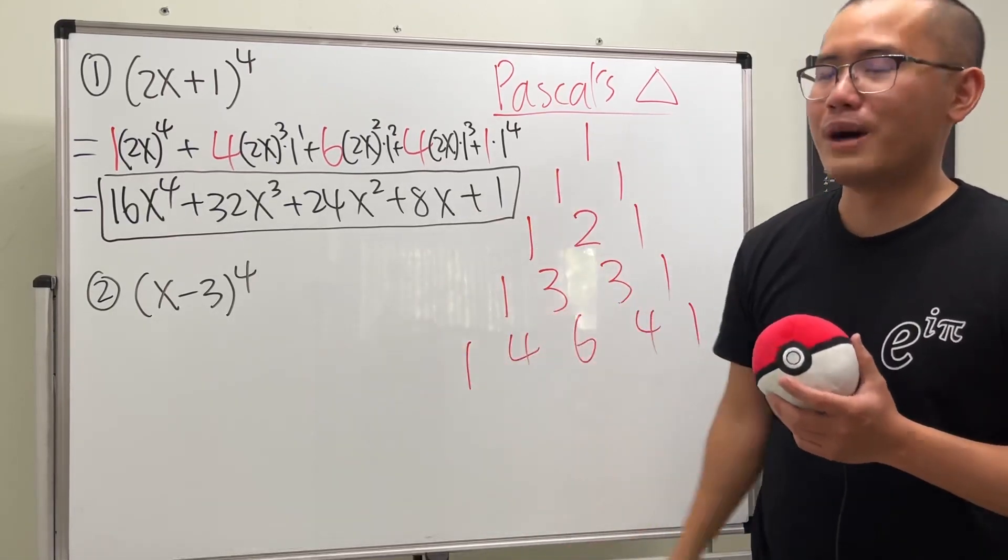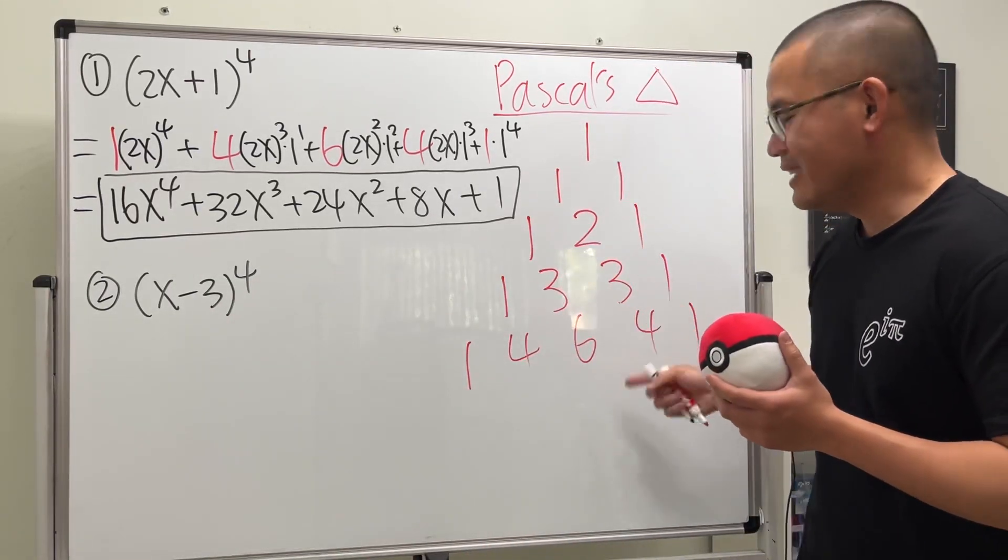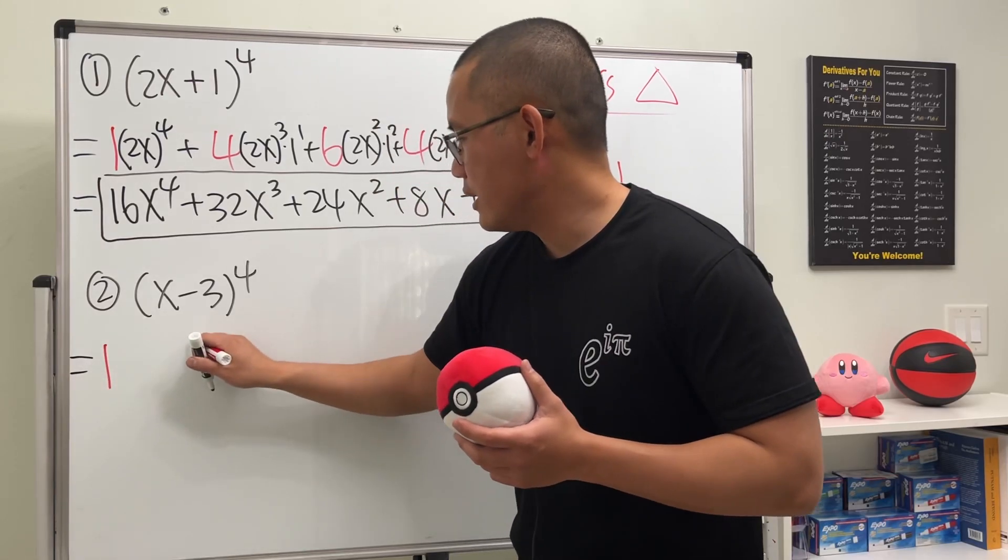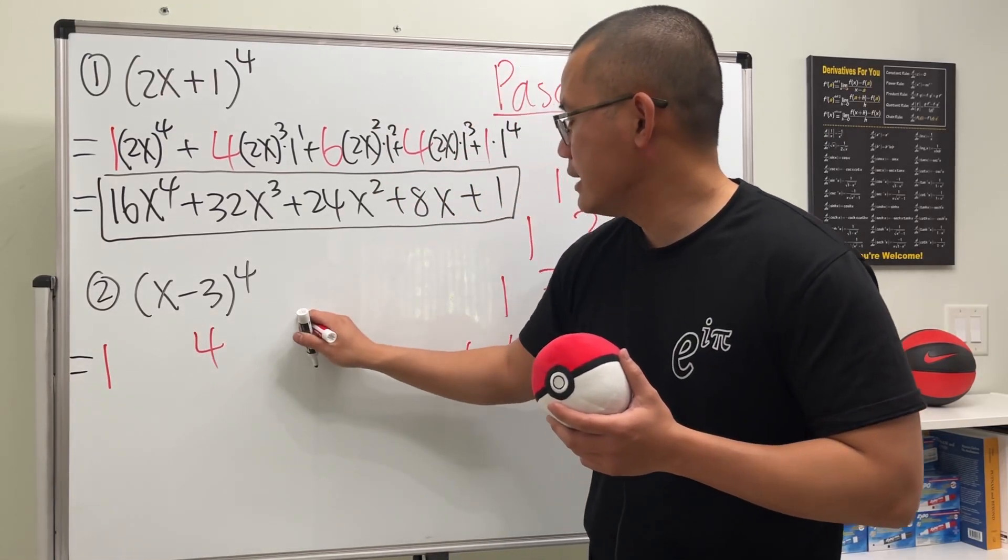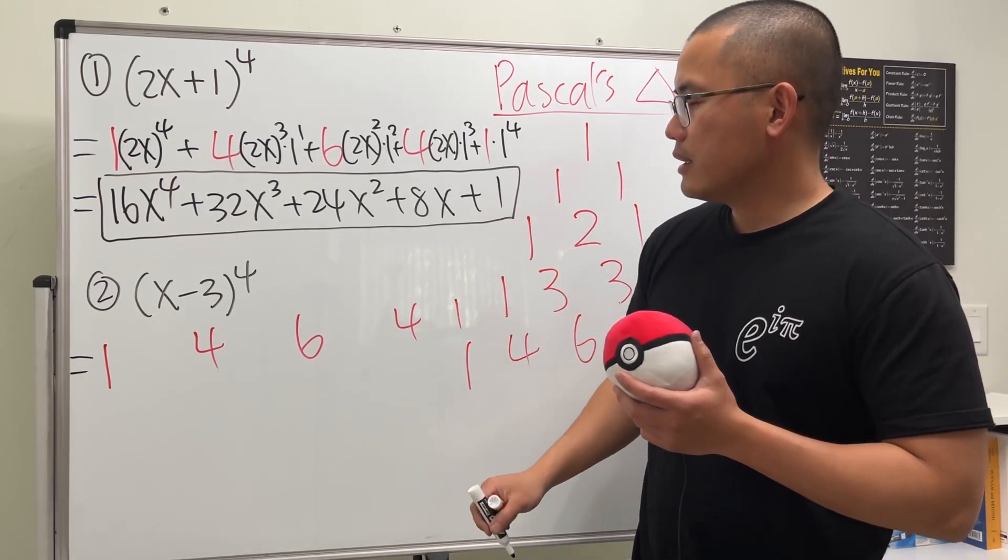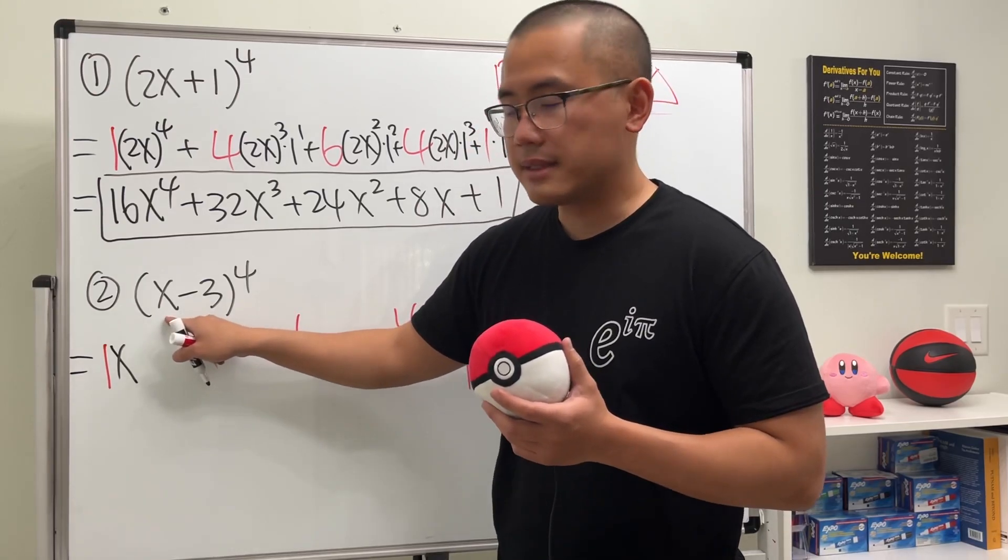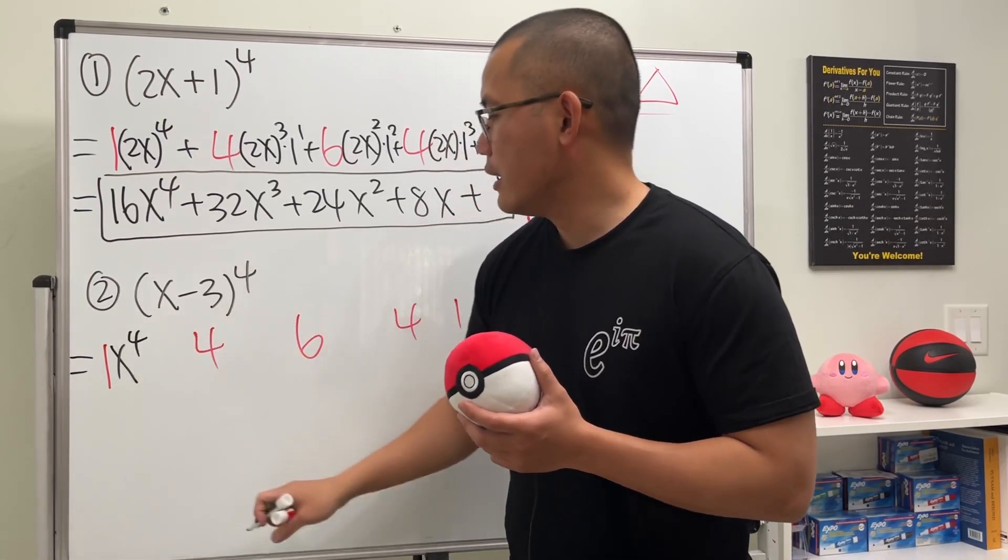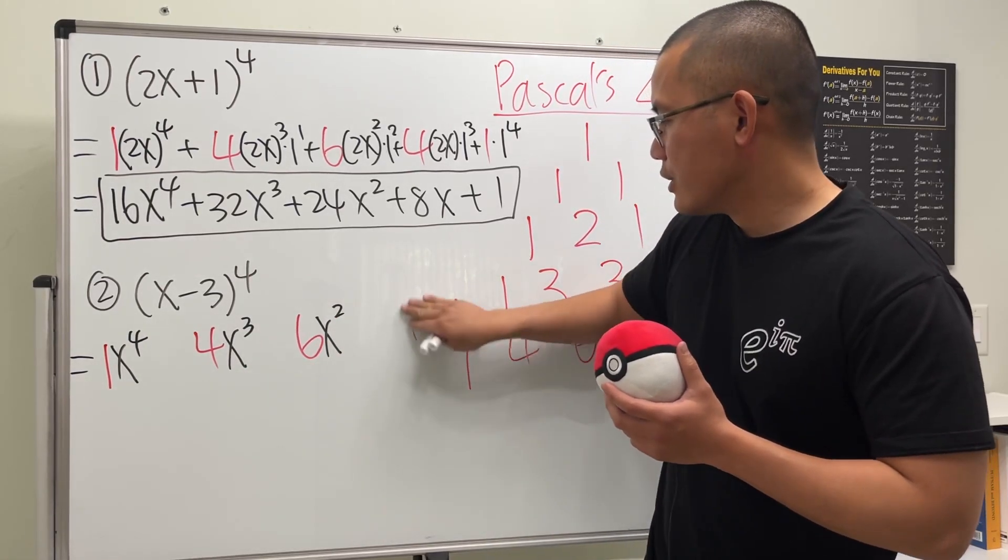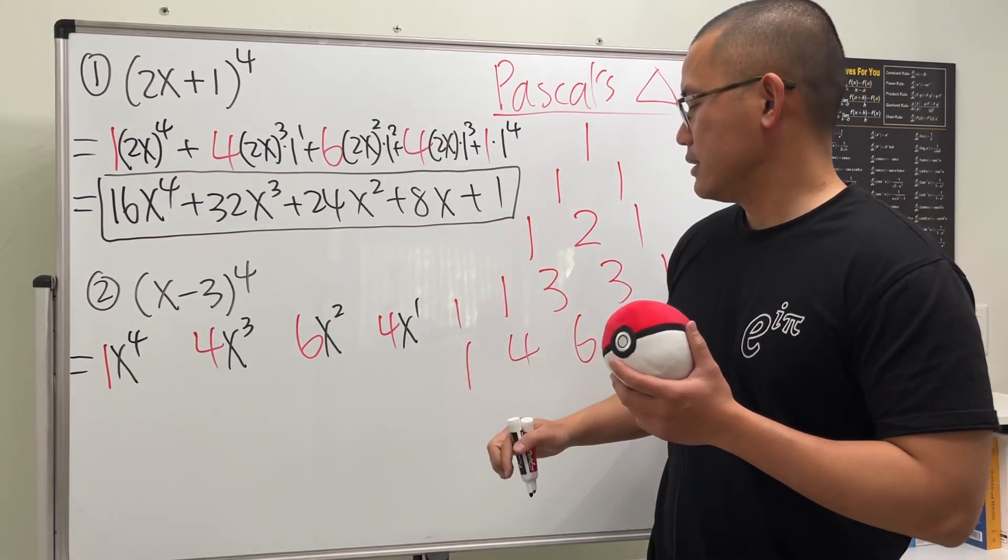Let's try the other one. We still use this row because we have the fourth power. So 1, 4, 6, 4, 1. Here we go. Let me write down: 1, and then 4, 6, 4, and 1. So start with x. This term is just x. Raise that to the fourth power. And then x to the third power. X squared. X to the first power. And then no x.